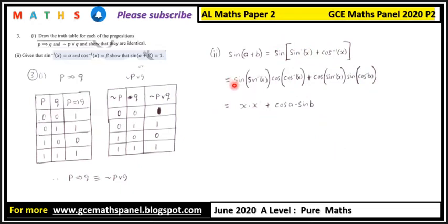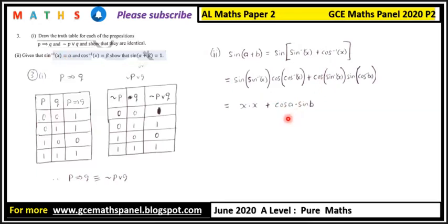We know that sine of sine inverse of x is x, and cosine of cosine inverse of x is x. So that gives us x times x, plus cos(sin⁻¹x) times sin(cos⁻¹x). Since sine inverse of x equals a, we need to find cos(a) and the remaining term.